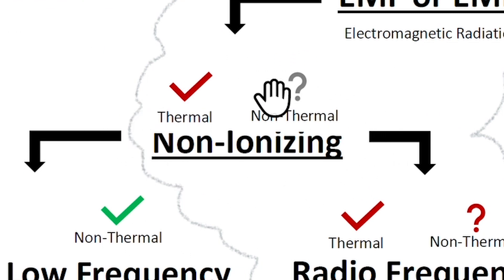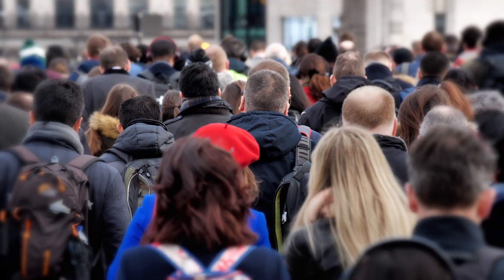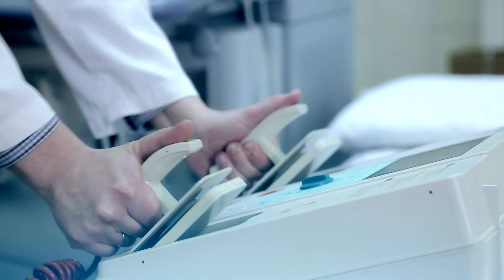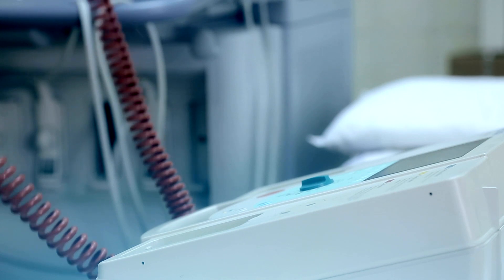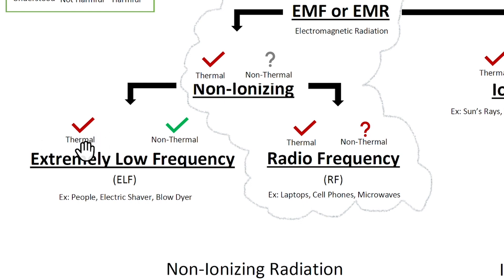Now let's talk about the other type of EMR: non-ionizing. There are more than just these two types of non-ionizing radiation, but we're only going to cover extremely low frequency, ELF, and radio frequency, RF. Examples of ELF are electric shaver, blow dryer, and people. That's right — we are electromagnetic beings. This is why when you flatline, they try to give you a jump start with a defibrillator. ELF can create thermal effects that are harmful to humans, but with limited dosage and exposure you are fine. Obviously, don't hold a blow dryer in front of your face for an extended period of time. So red check — we are confident that it's harmful but understand the limits.